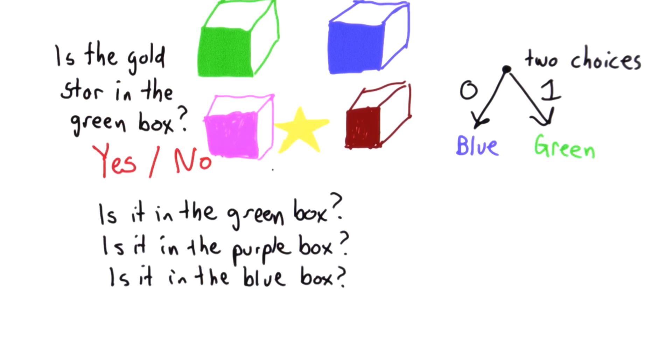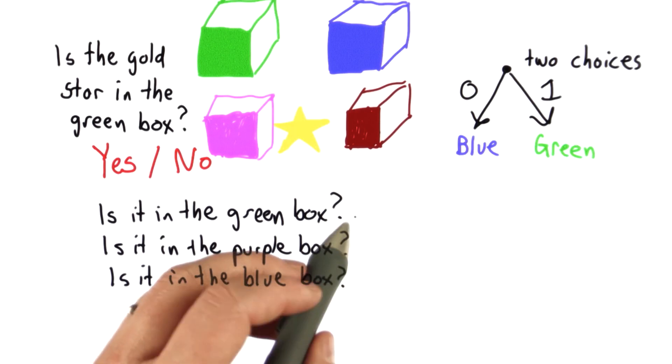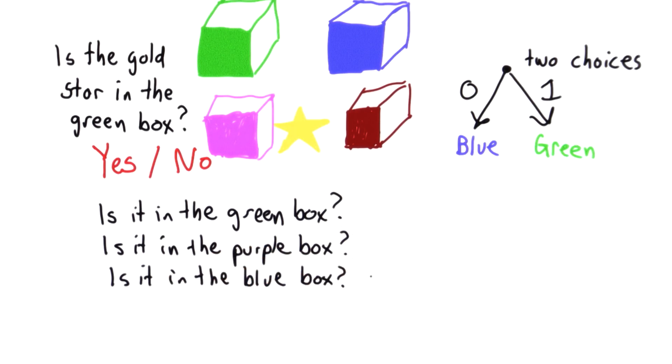And as long as we know there's at least one gold star, we don't really need to ask if it's in the dark red box. Because if we got no's for all three of these, well then we know the answer to that next question, if we asked if it was in the red box, would be yes. So here we needed up to three questions to figure out which box the gold star was in.